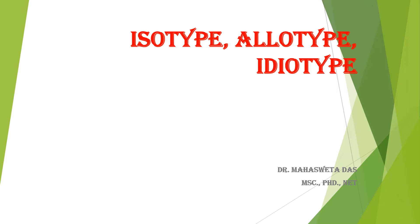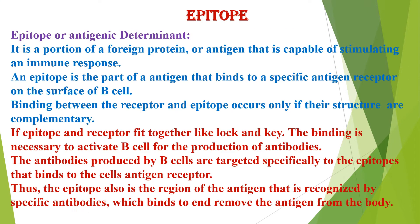Let me first start with epitope and paratope. Epitope is otherwise called antigenic determinant. It is a portion of a foreign protein or antigen that is capable of stimulating an immune response. An epitope is a part of antigen that binds to a specific antigen receptor on the surface of the B cells.